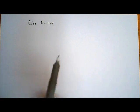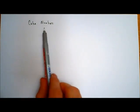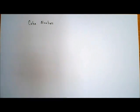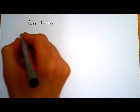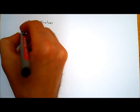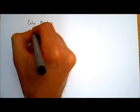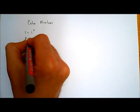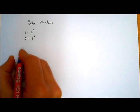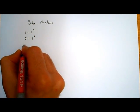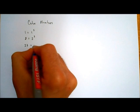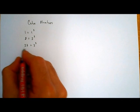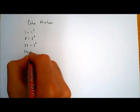We've already seen what a square number is, and a cube number is very similar, except it's a number that can be written as some other number cubed. So if I take the number 1, well 1 is equal to 1 cubed, so 1 is called a cube number. The next cube number is 8 because 8 is equal to 2 cubed. Then 27 is equal to 3 cubed, so 27 is called a cube number. The next cube number is 64.